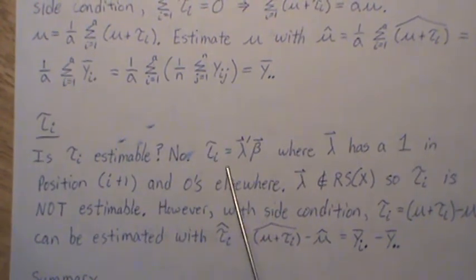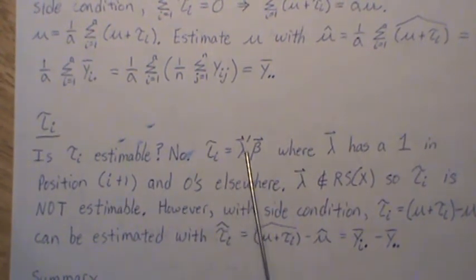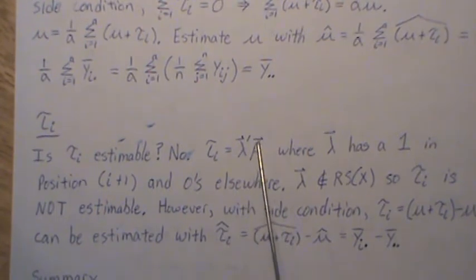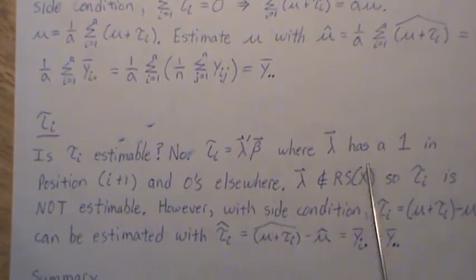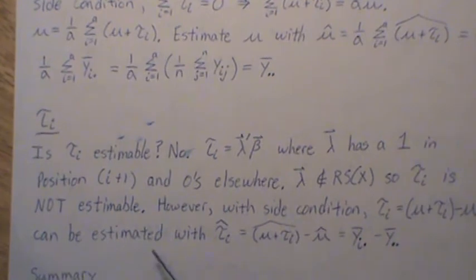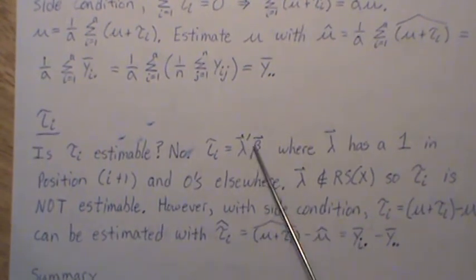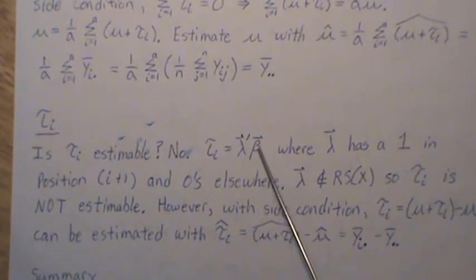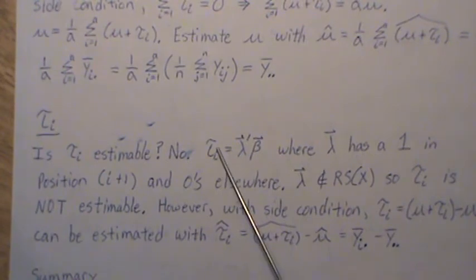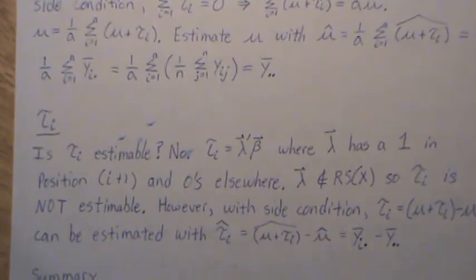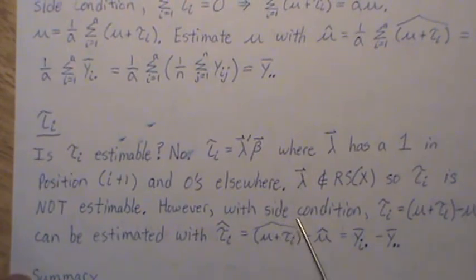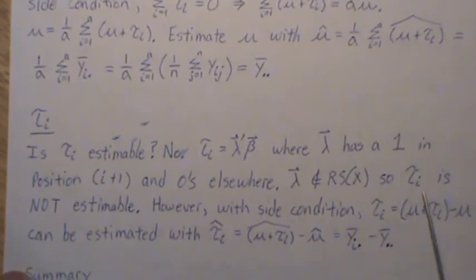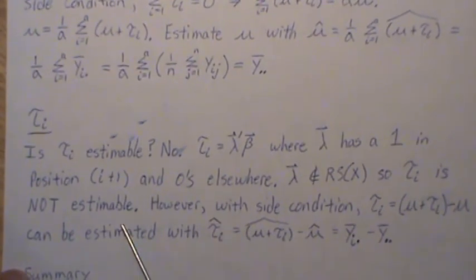But the τᵢ, is it estimable? The answer is no, because to look at τᵢ, this λ would have to have a 1 in position i+1 and 0s elsewhere. So it picks off that ith, the τᵢ. But λ is not in the row space, no matter how, you just, you can't do it. So τᵢ is not estimable.